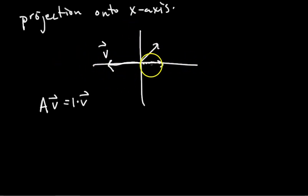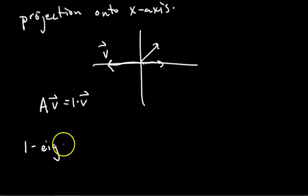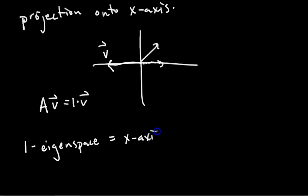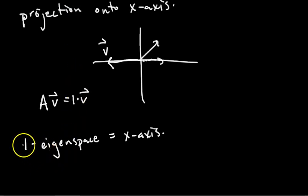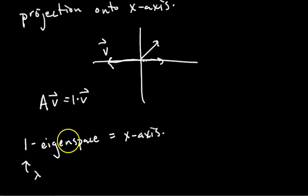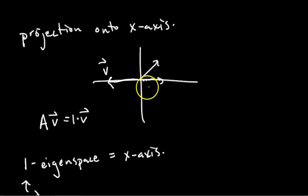The collection of all eigenvectors sharing the same eigenvalue is called the eigenspace. In this case, the one-eigenspace — meaning the collection of all eigenvectors with eigenvalue one — for this projection transformation equals the x-axis. Eigenspaces are subspaces. The one-eigenspace is the collection of all vectors that get scaled by one as a result of this transformation.